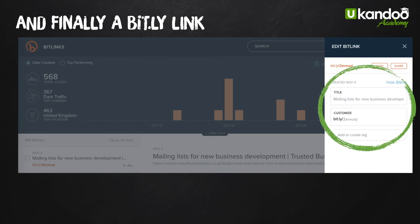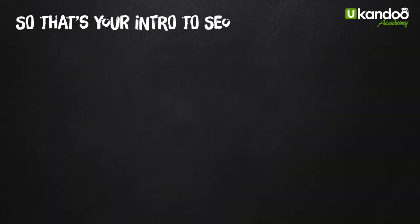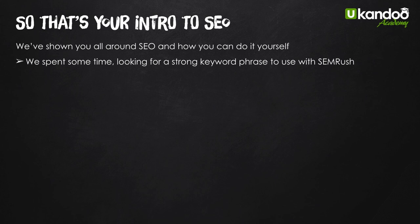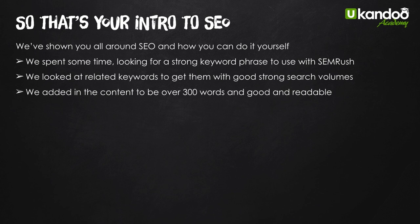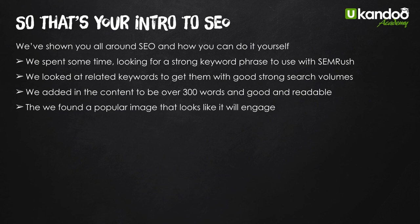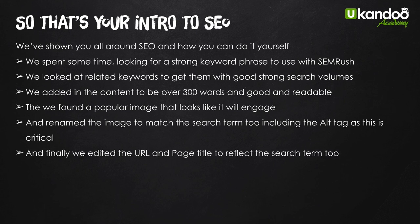So - shortened it with Bitly and shared through all the social channels. About two weeks later I put the search term 'mailing list for new business development' in and there we are, fourth of November, right at number one - behind four ads obviously. So that's your intro to SEO and how you can do it yourself. In this lesson we spent time finding a strong keyword with SEMrush, looked at related keywords with good search volumes, wrote over 300 words of good readable content, found a popular image, renamed it to match the search term, included the alt tag - which is absolutely critical - and added the search term to the URL and page title. Then we put it live and basked in the glory of it getting straight to number one.